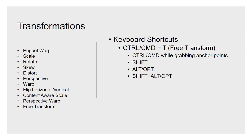Moving on to transformations. There are a lot of different transformations — Puppet Warp, Scale, Rotate, Skew, Distort, Perspective, Warp, and more. Some sound similar, like Puppet Warp and Warp, but they're not the same. If you go to the Edit menu and go down to Transform, you'll see some of these under the transform flyout and some directly under Edit. Play around with them — some names are intuitive, some you have to experiment with.